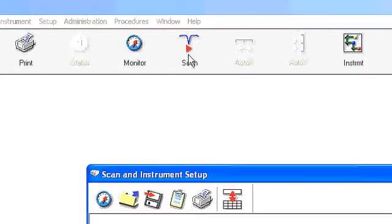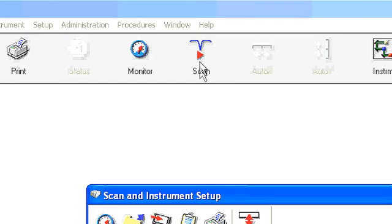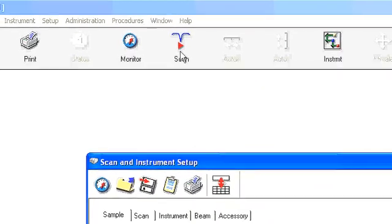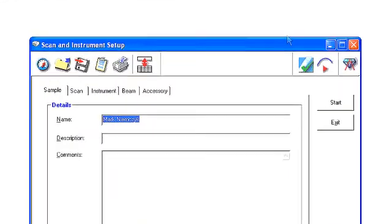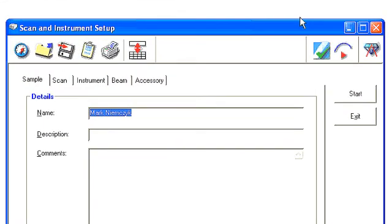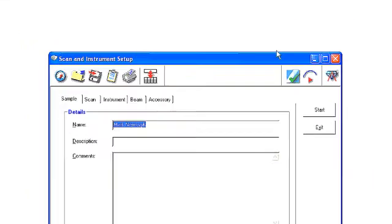The first thing we do is to click on the icon at the top of the screen, which is called Scan. Every IR spectrum that we take has to be preceded by what we call a background spectrum, and that can be found on the Scan and Instrument Setup panel here by clicking this particular icon. It always looks to me like an eye with an eyebrow over it.